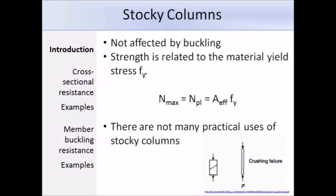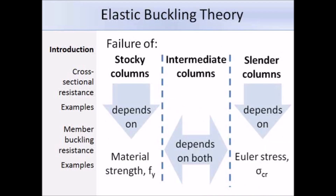A column is considered stocky when its slenderness lambda-bar is less than 0.2, and it will not be affected by buckling. Instead, the strength of the column is related to the material strength, and the maximum compression resistance N_max equals the plastic resistance N_pl, which is the effective area of the cross-section times the yield strength. For columns of extremely low slenderness, failure depends on material strength; for slender columns, failure depends on Euler stress; and for intermediate columns, failure depends on both material strength and Euler stress. Out-of-straightness and residual stresses are the imperfections with the most significant effect on intermediate column behaviour.